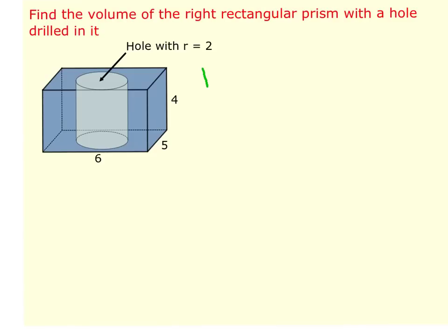So what we're going to do here is we're going to take the volume of the prism, and we're going to subtract the volume of the cylinder. And what that will do is it'll give us this kind of darker shaded region that's around the hole.